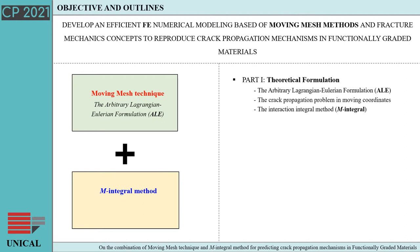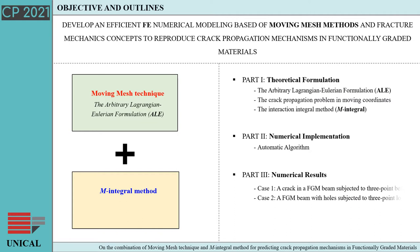This presentation is structured in four parts. In part one, the theoretical formulations of the arbitrary Lagrangian-Eulerian formulation and the interaction integral method are described. In part two, the numerical implementation is reported; in particular, this section deals with a detailed description of the algorithm used to handle the propagation process. Part three presents numerical applications of the proposed modeling approach, showing results from two benchmark cases reported in the literature. In part four, some final remarks are discussed.